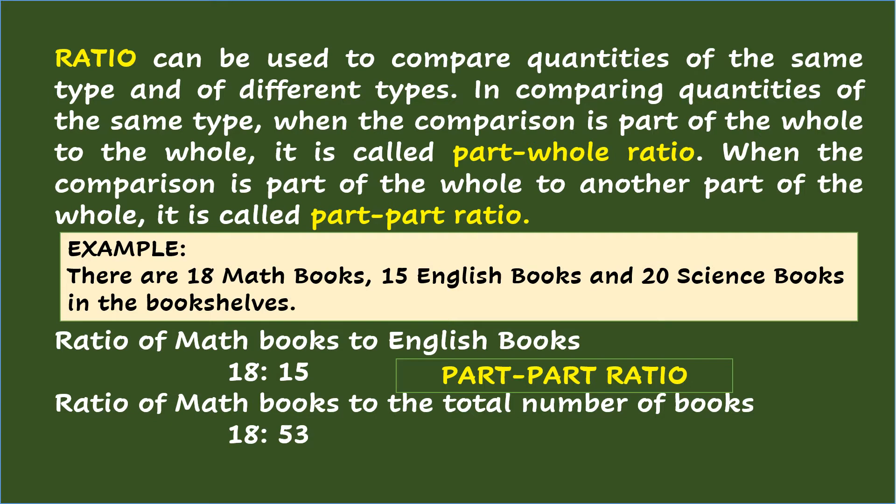This kind of ratio is known as part-whole ratio, since 18, which is the number of math books, is just a part of the given books, and 53, which is the total number of books, signifies the whole.